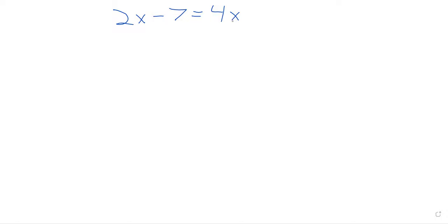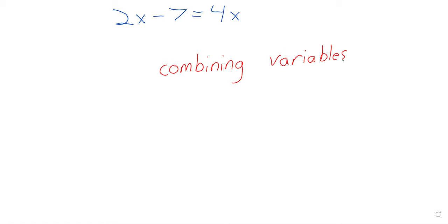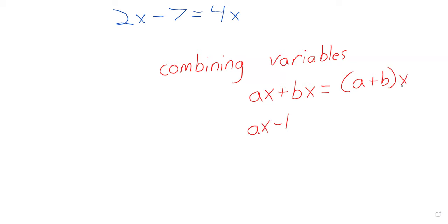In a situation like this, we can combine variables. And if you want to think about it formally, combining variables is an application of the distributive property used in reverse. So ax plus bx equals a plus b times x.